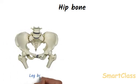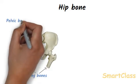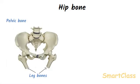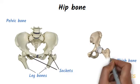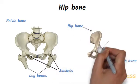Each shoulder blade has a cup-shaped socket — the upper arm fits into this socket, forming a ball and socket joint. The hip bone forms a large basin-shaped frame at the lower end of the backbone to which the legs are attached. The hip bone is also known as the pelvic bone. It is made up of a number of bones fused together by fixed joints. The hip bone has two sockets on its lower sides, and the thigh bones of our legs are joined to the hip bone by ball and socket joints.